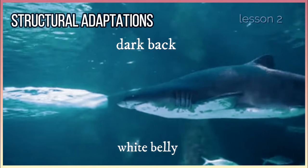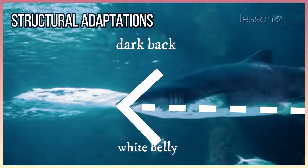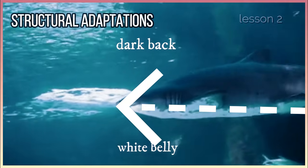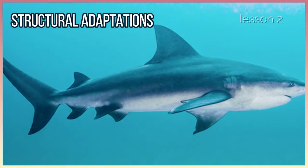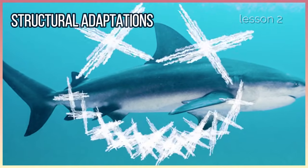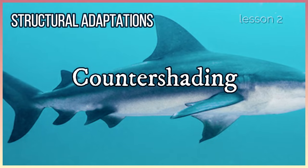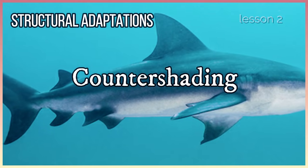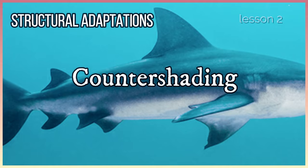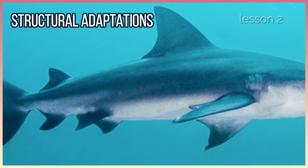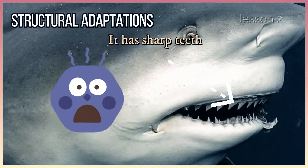When an animal swimming underneath the bull shark looks up, the bull shark may blend in with the bright light of the sun due to its white belly. So the bull shark can sneak up on prey using a camouflage strategy called countershading. Can you repeat after me: countershading. It also has sharp teeth to help it sneak up on its prey and tear their flesh.